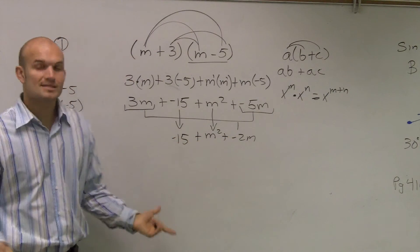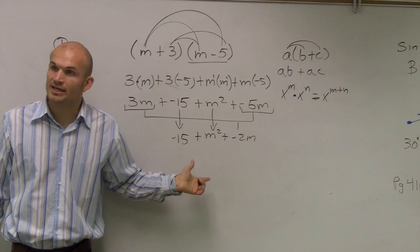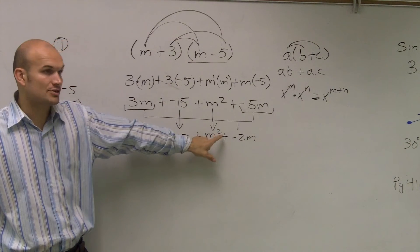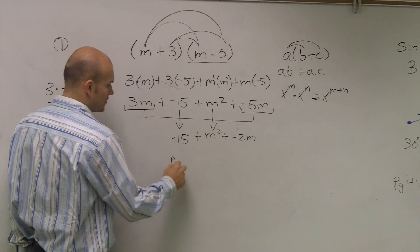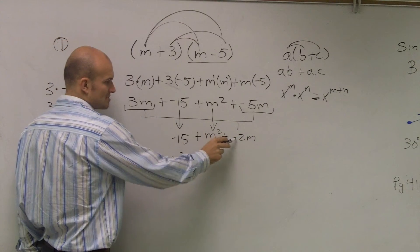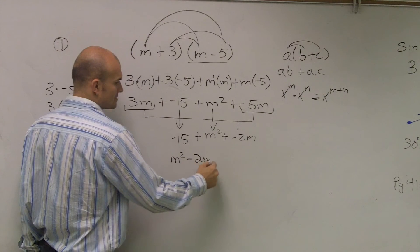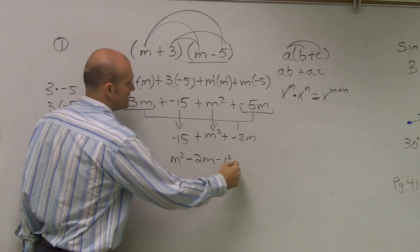And then I can bring down M squared and bring down negative 15. Now, the last thing I want to do is make sure I rewrite this in standard form. Remember, standard form has your highest degree first and then going down in order. That's a positive M squared. Instead of writing plus minus, we can just write subtract two M and then minus 15.